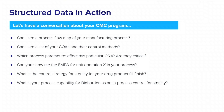A structured digital approach has the potential to change this dynamic for all involved. This conversation may go something like: Can I see a process flow map of your manufacturing process? Can I see a list of your critical quality attributes and their control methods? Which process parameters affect this particular critical quality attribute and are these process parameters critical? Can you show me the FMEA for unit operation X in your process? What is the control strategy for sterility for your drug product fill finish? What is the process capability for bio burden as an in-process control for sterility?